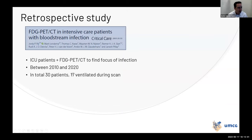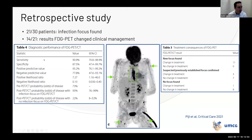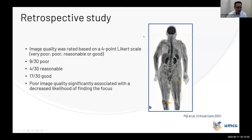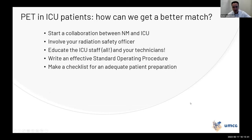Retrospectively, between 2010 and 2020, we only performed scans in 30 ICU patients — not many. Results were good: sensitivity and specificity around 90%, and in 14 out of 21 cases the PET scan changed clinical management. However, the main disadvantage was poor to reasonable image quality in many patients. ICU patients often receive multiple intravenous solutions, enteral nutrition isn't stopped, they use insulin, and carbohydrates aren't stopped. They also often have multiple organ failure — kidney and liver failure — leading to reduced background clearance and reduced FDG metabolism.